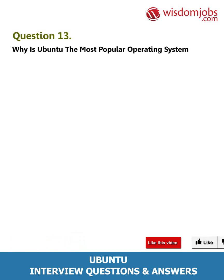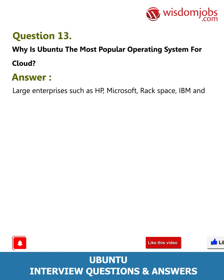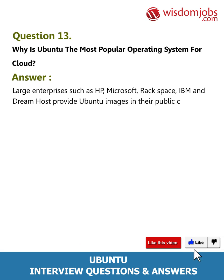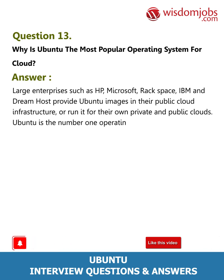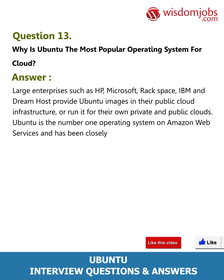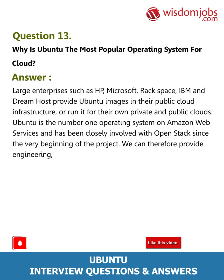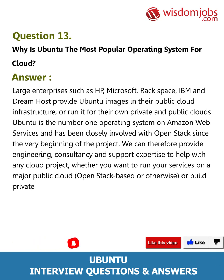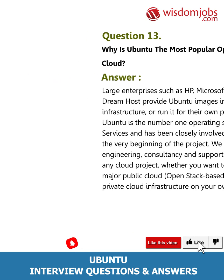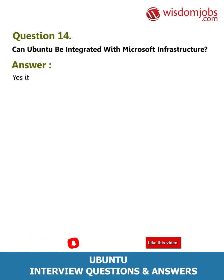Question 13: Why is Ubuntu the most popular operating system for cloud? Large enterprises such as HP, Microsoft, Rackspace, IBM, and Dreamhost provide Ubuntu images in their public cloud infrastructure or run it for their own private and public clouds. Ubuntu is the number one operating system on Amazon Web Services and has been closely involved with OpenStack since the very beginning of the project. Canonical can therefore provide engineering, consultancy, and support expertise for any cloud project.